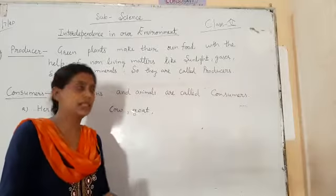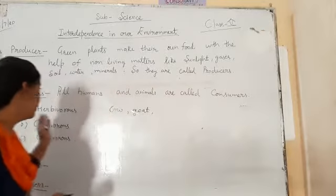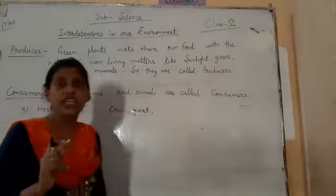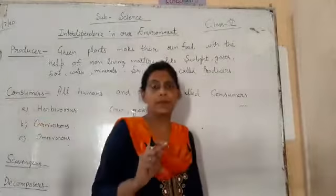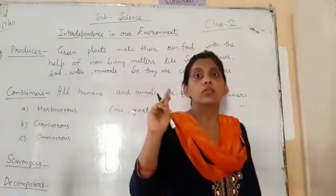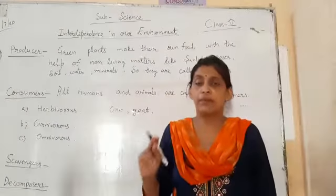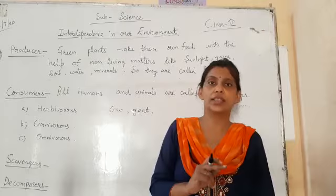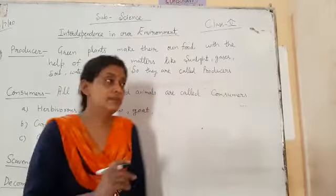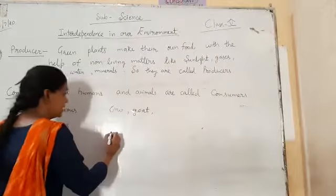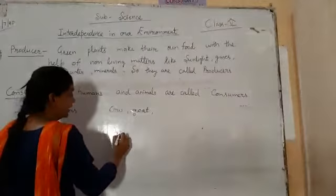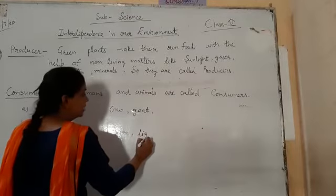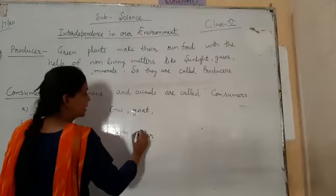Second is carnivores. Carnivores are flesh-eating animals. They can be large animals or small animals. Examples of carnivores include lion, tiger, and all the animals in the ocean.